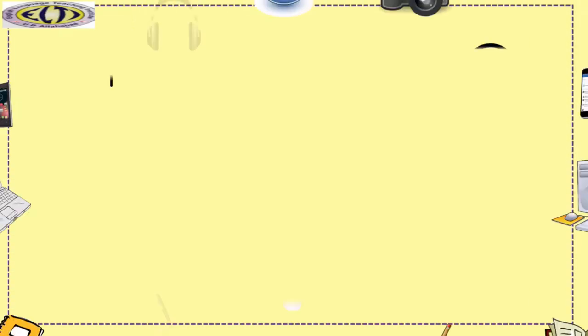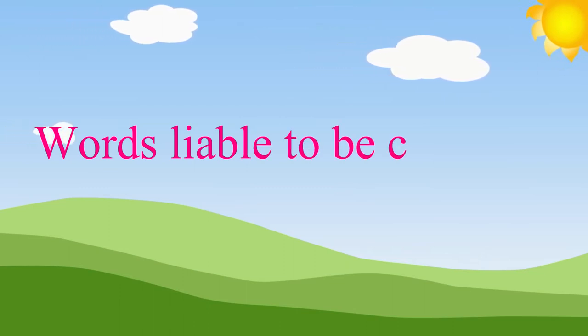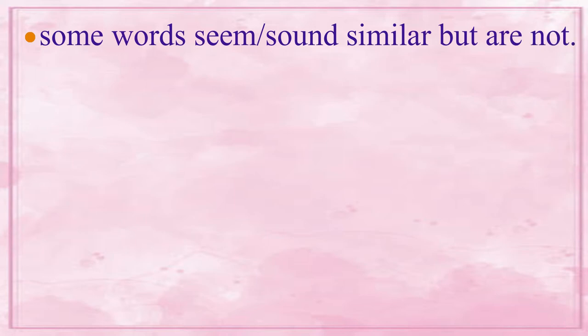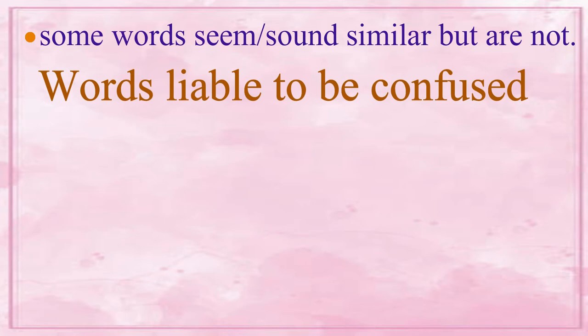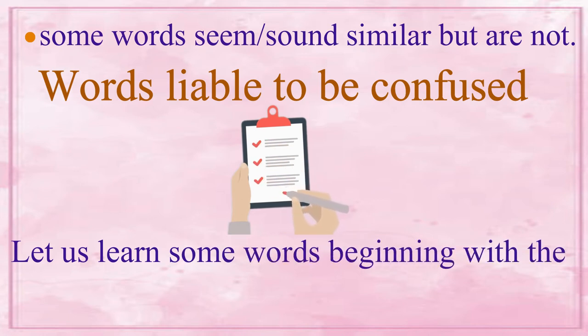Hello everyone and welcome back to online spoken English class. The name of this module is Words Liable to be Confused. Some words seem or sound similar but they are not similar. They can be termed as Words Liable to be Confused. In this module, we shall deal with a list of some such words beginning with the letter A.